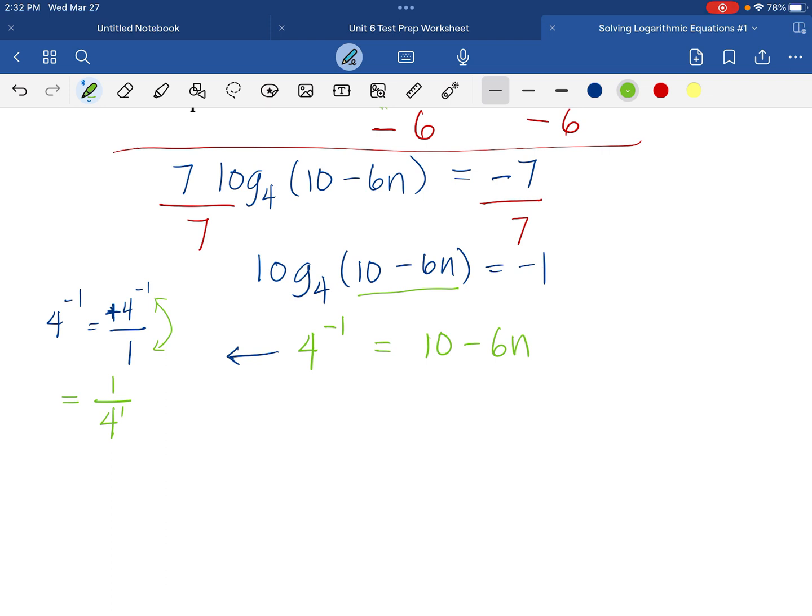So, our 4 to the power of negative 1 will turn out to be 1 fourth. So that is how this will change into 1 fourth.